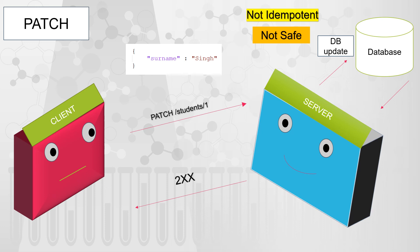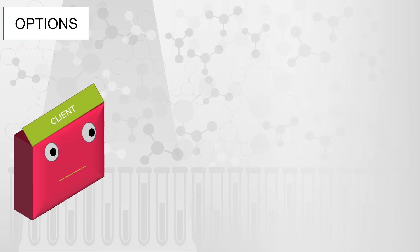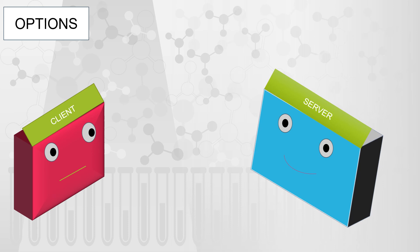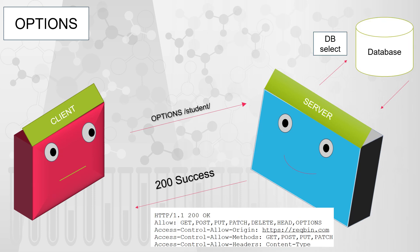The next method is OPTIONS. OPTIONS is also not frequently used compared to other HTTP methods. It is used to get the list of available options for a given URI. The client sends the OPTIONS call to the server, and the server returns the allowed methods and other headers that help the client understand what operations are allowed on that particular URI. OPTIONS is idempotent and safe because it does not change anything on the server.